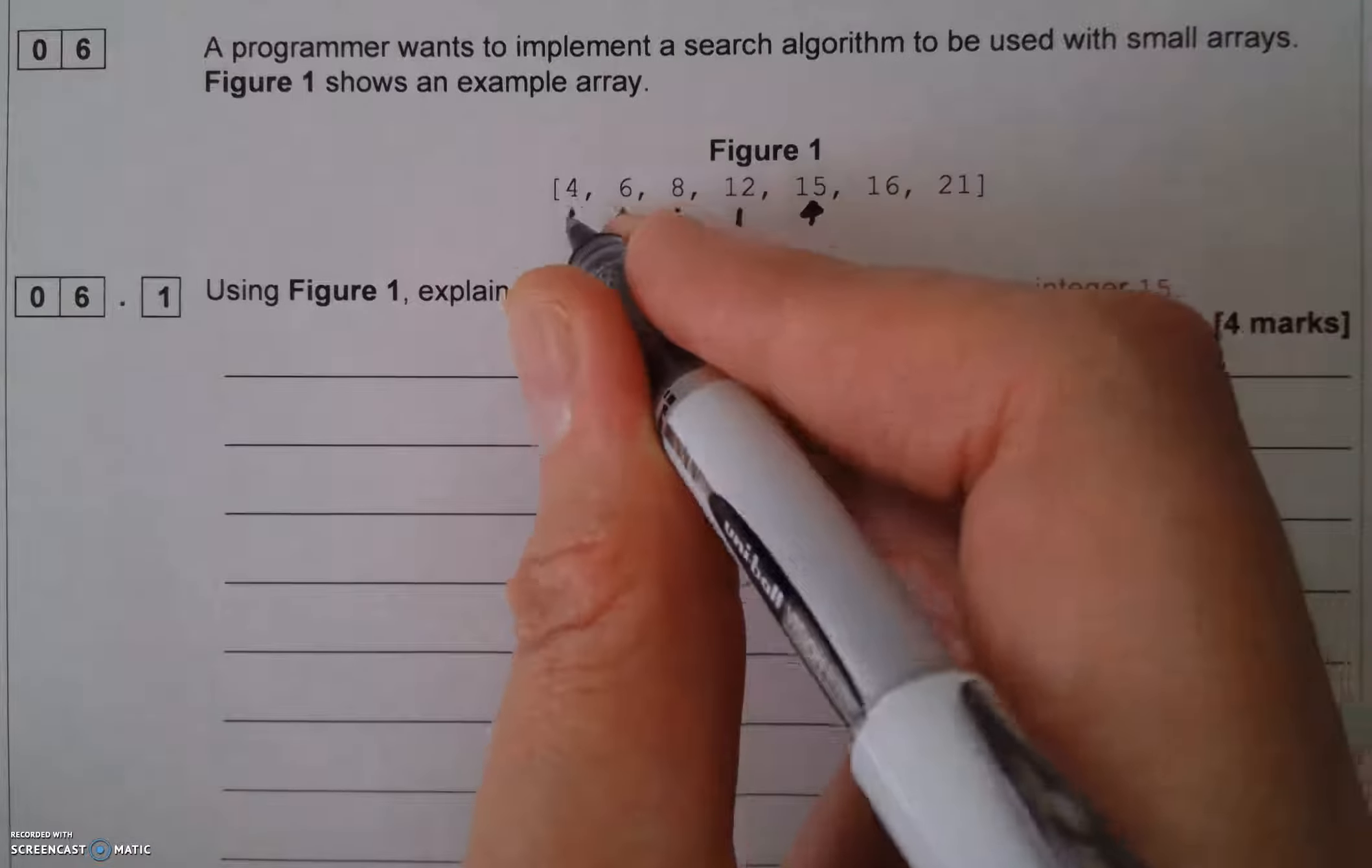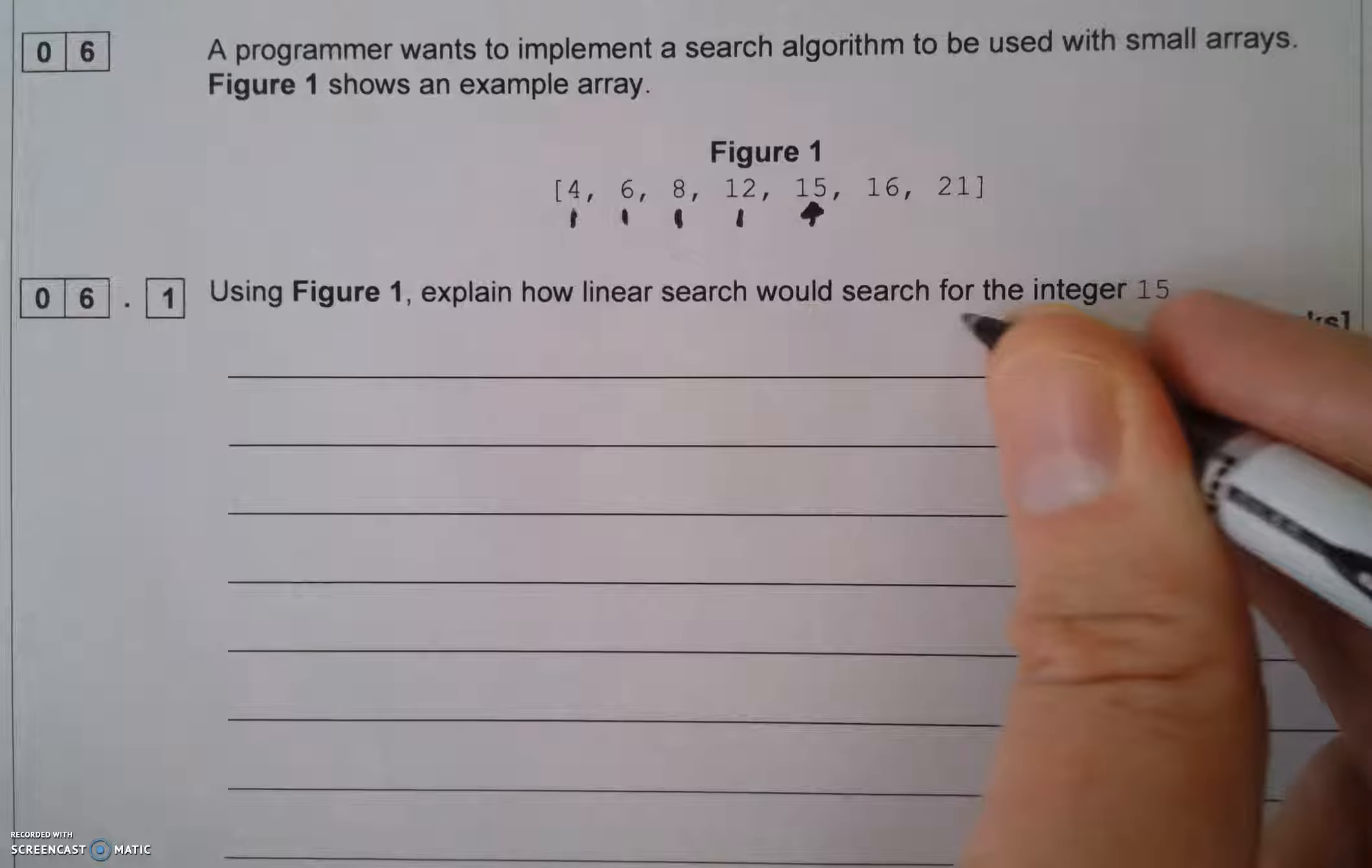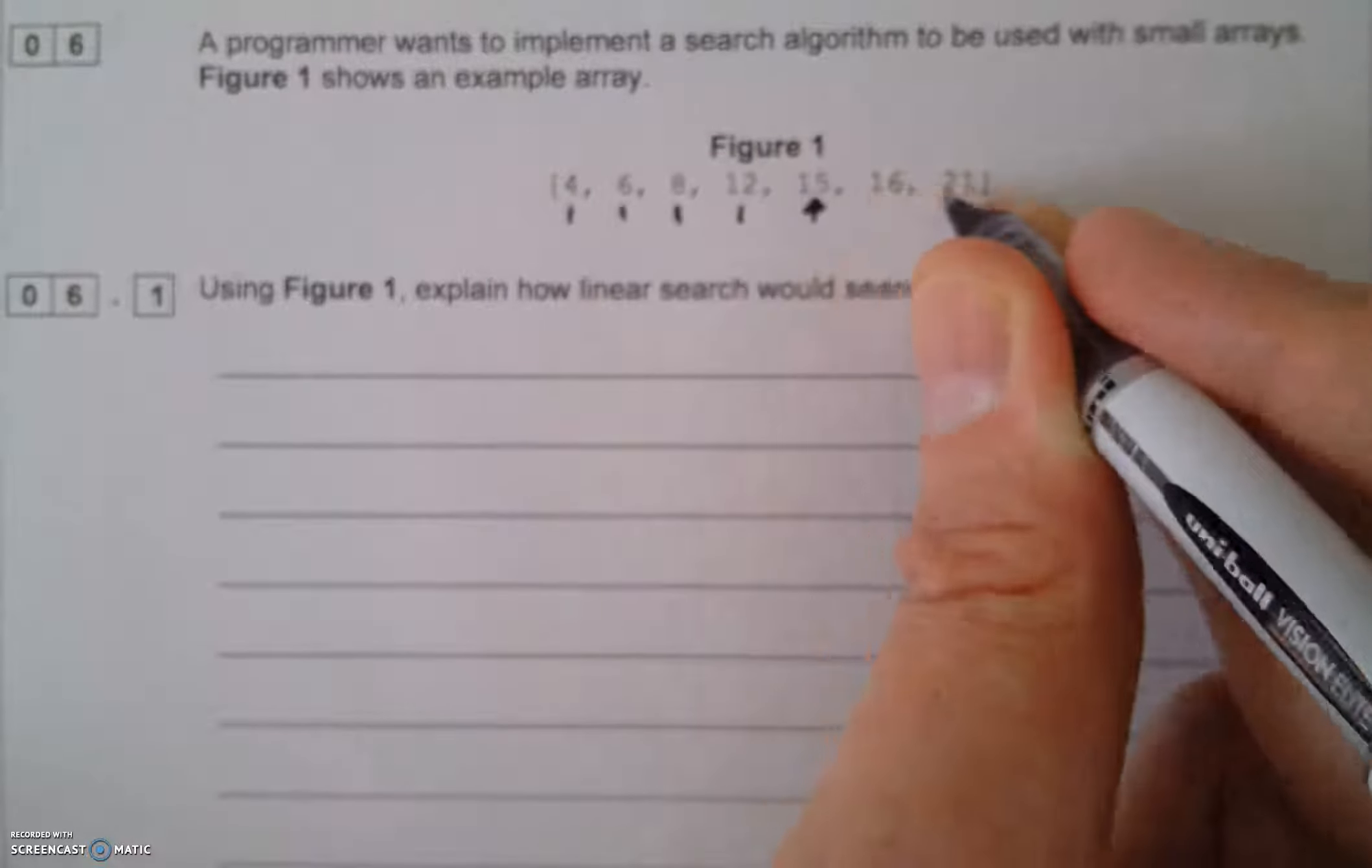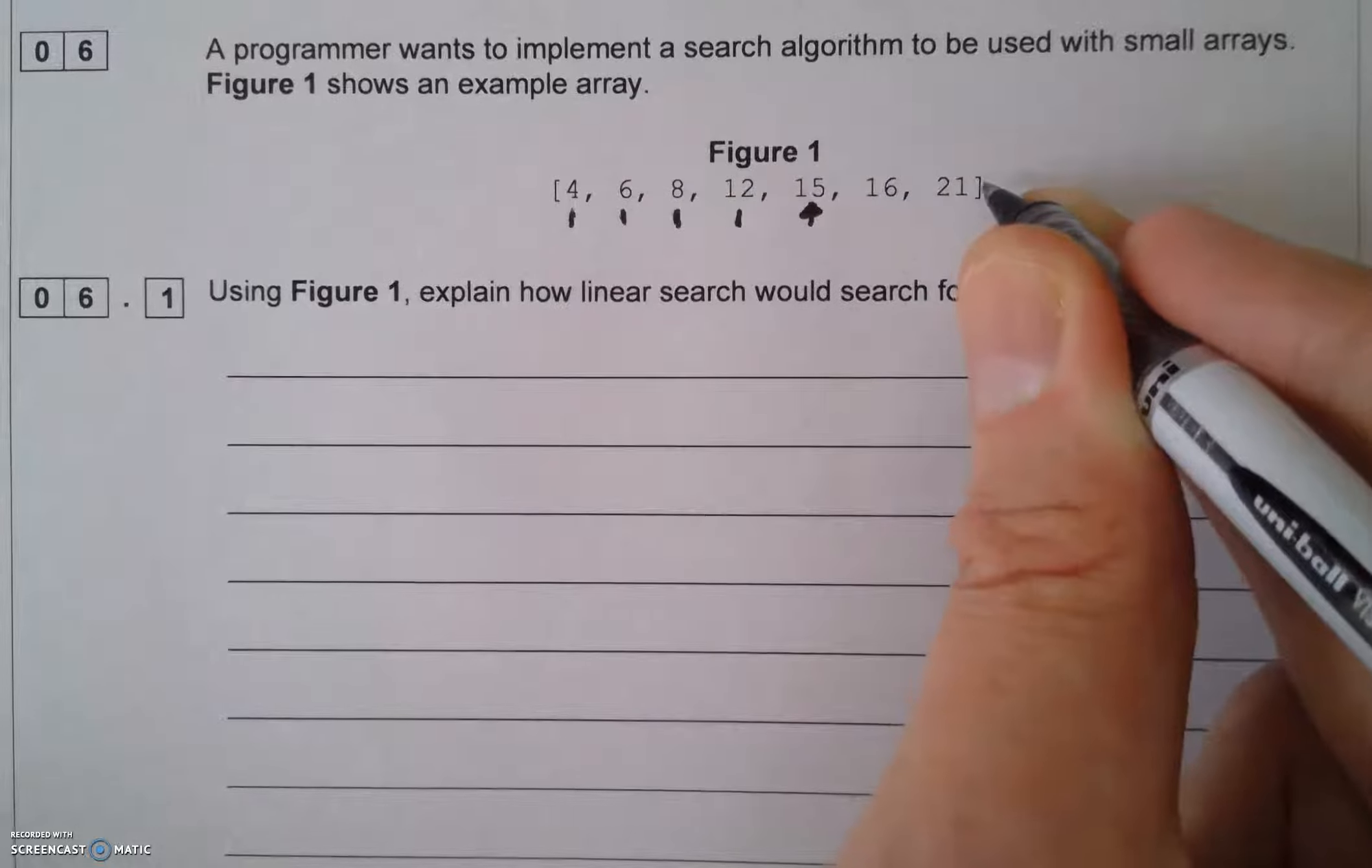We'll look at a linear search now. I've got a question here that relates to this small array and asks me to explain how the linear search would find the integer 15 in that array. I've got a small array of seven numbers. An array is also known as a list - in Python it's known as a list.